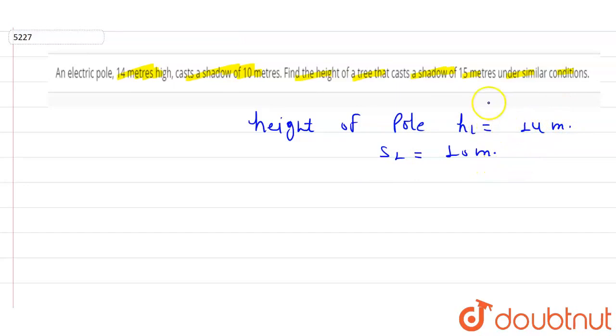For the tree, H2 is the height and S2 is the shadow. Since height is directly proportional to shadow, we can say that height upon shadow will be constant. This is direct variance.